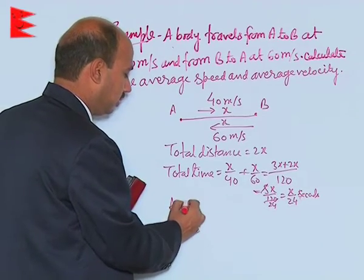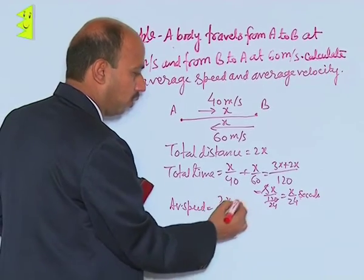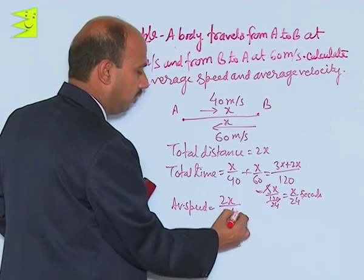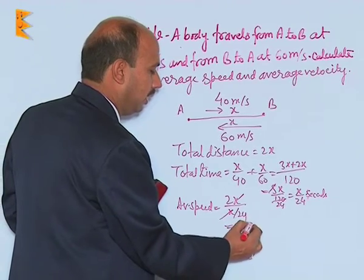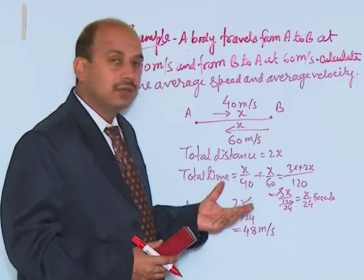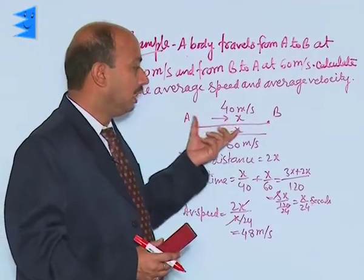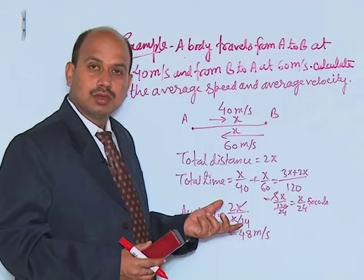So average speed is equal to 2x upon x by 24. This cancel, you will be getting 48 meter per second. So now, see here for calculating average speed, it is must to get total distance and then the total time taken.